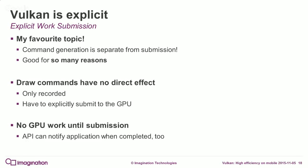Work submission is a key topic: command generation is separate from submission. The draw commands have no effect on the GPU when called — you don't start rendering anything when you call vkCmdDraw. It just records into a command buffer. You have to then explicitly submit those commands to the GPU via a queue submission, and until you've done that, no rendering will occur. That's the only thing that can trigger rendering — a single entry point, one way to do it, nothing else can trigger it. You can also get notifications via synchronization objects in the API about when rendering has completed.